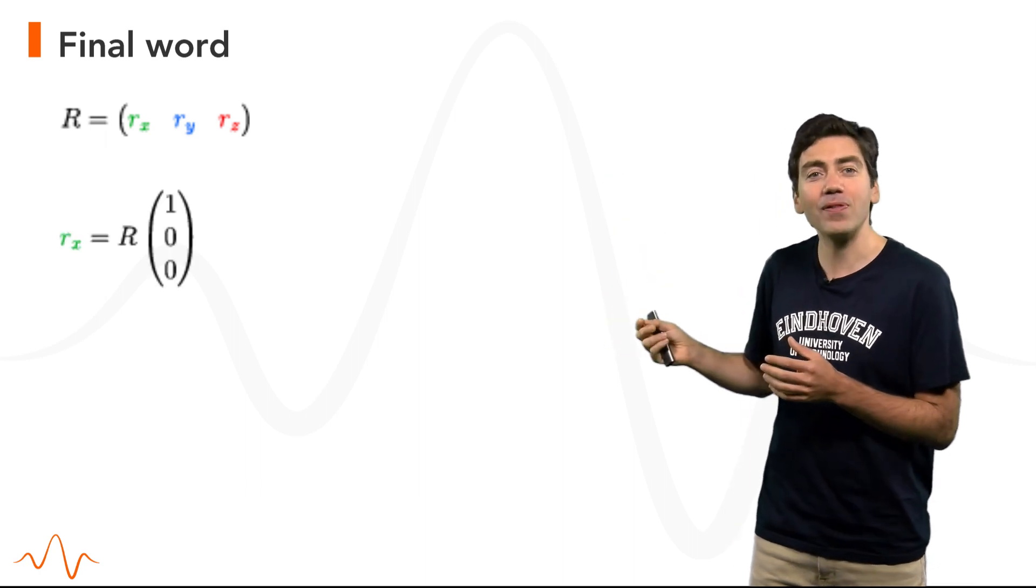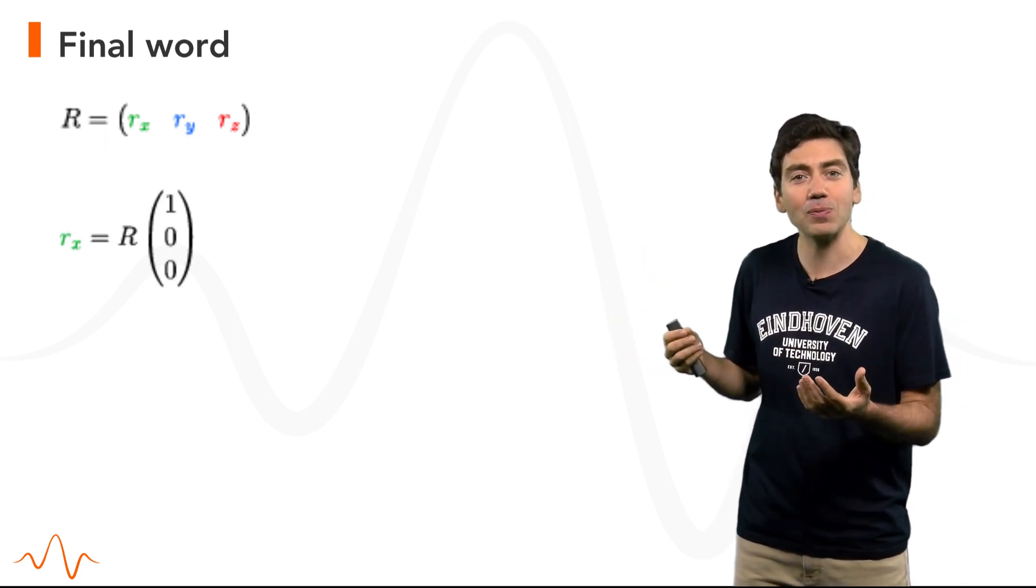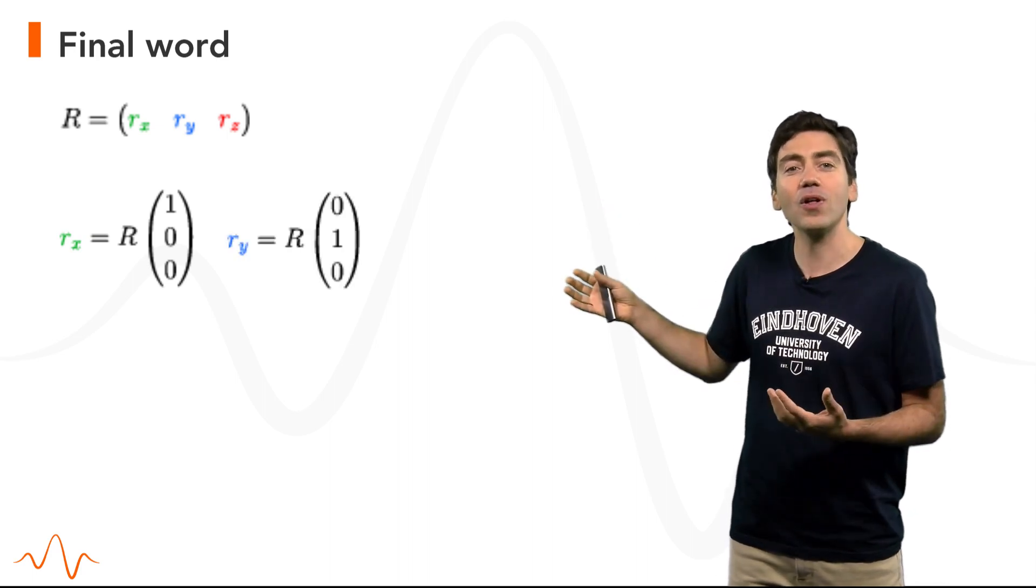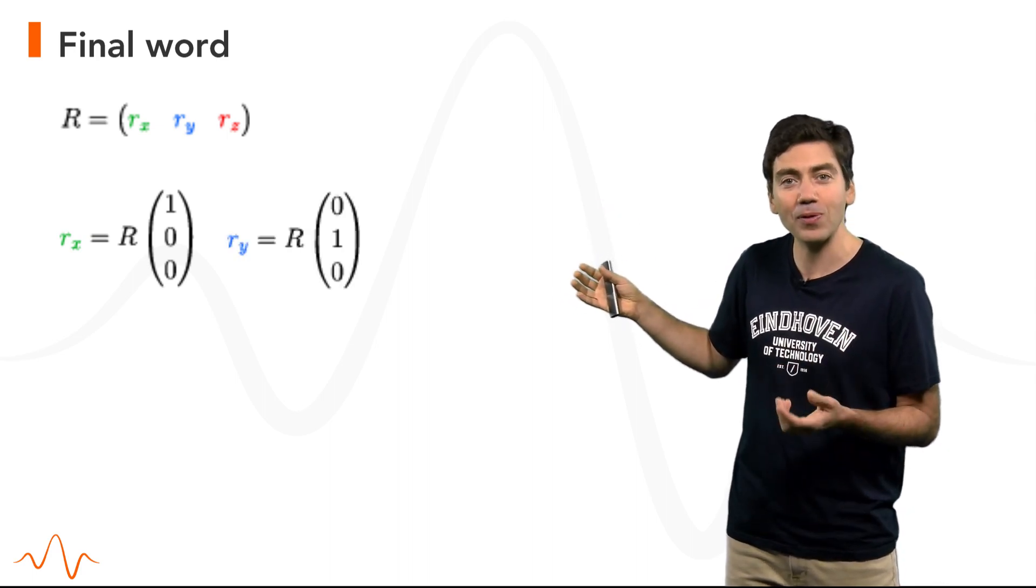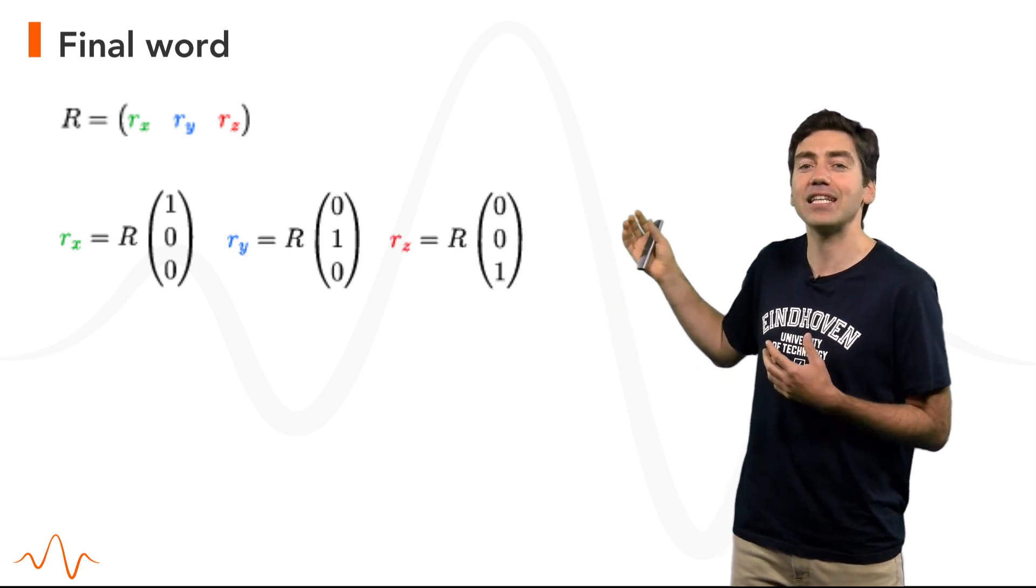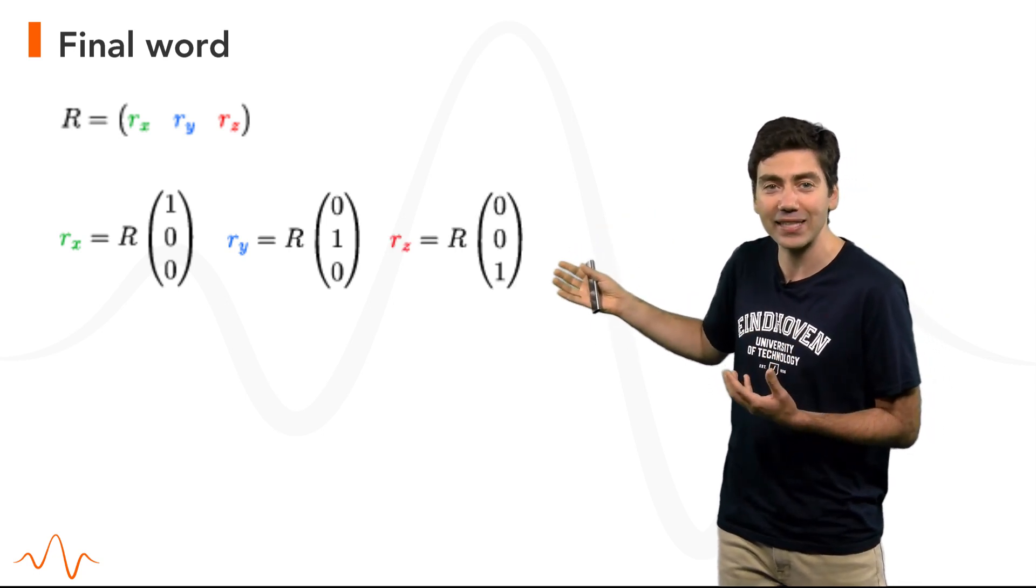The first column of this matrix is the unit vector corresponding to the rotation of the x unit vector. The second column of this matrix is the unit vector corresponding to the rotation of the y unit vector. And the third column is the unit vector corresponding to the rotation of the z unit vector.